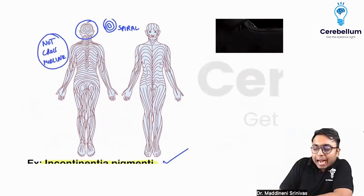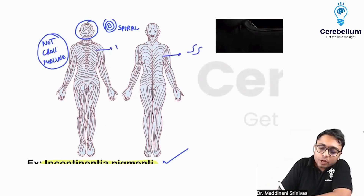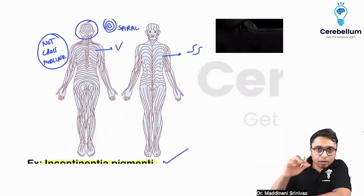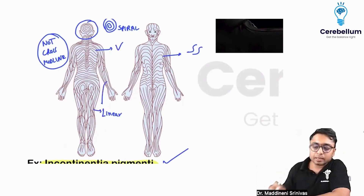Anteriorly, there will be an S-shape. On the upper back, you are going to have a V-shape. And in the limbs, they are linear.